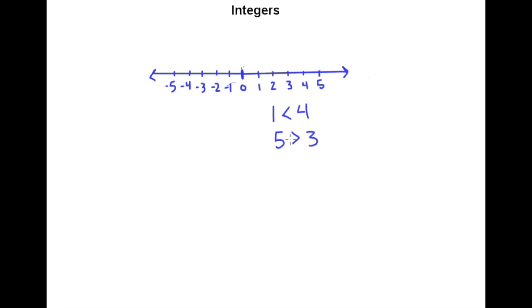And so the same rules apply for negatives. So if I want to consider negative one and negative four, I would have to say that negative one is actually greater than negative four. Why is that? Negative one is further to the right on the number line than negative four is. And I would have to say that negative five is less than negative three because negative five is further to the left on the number line than negative three.